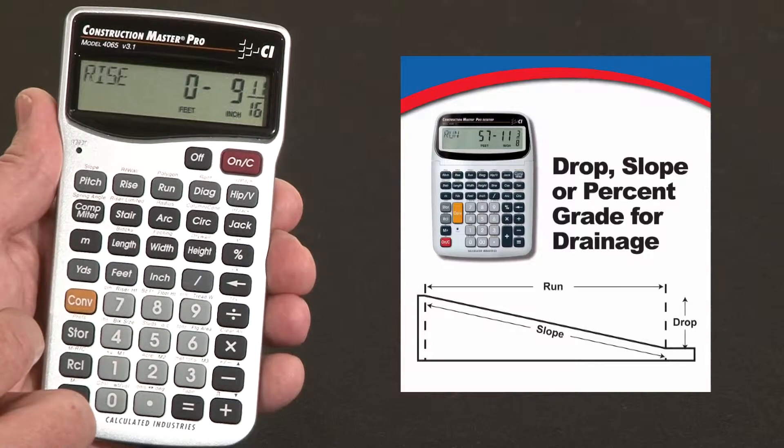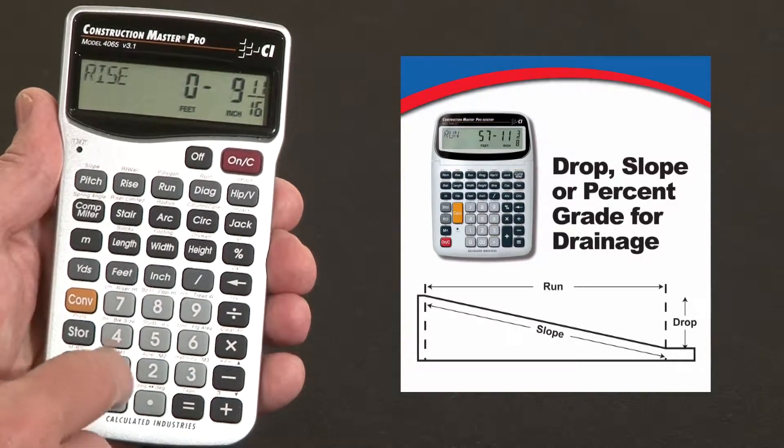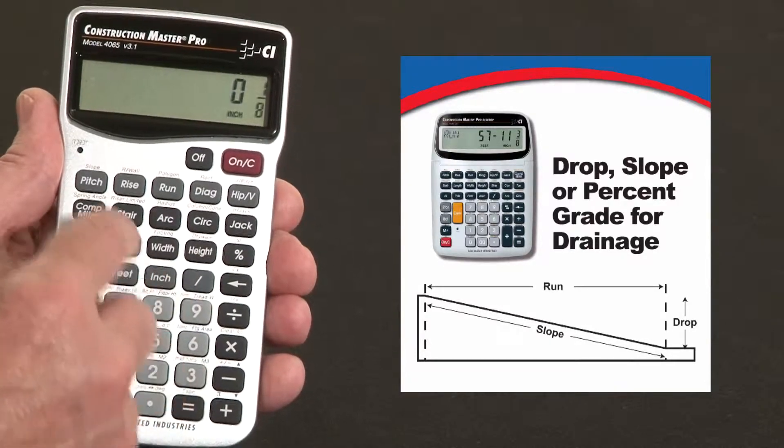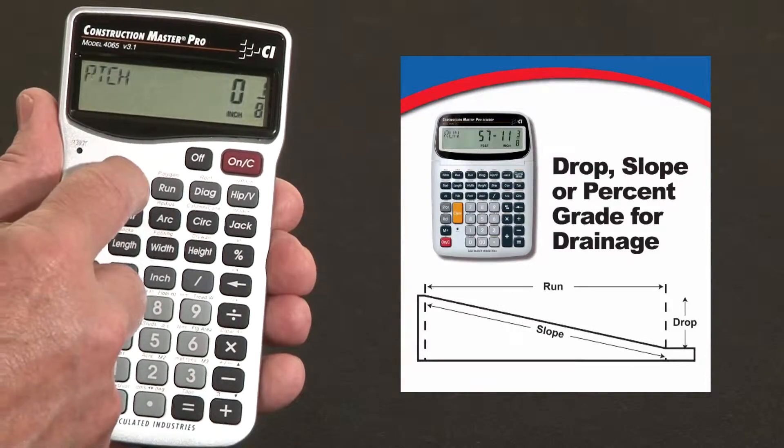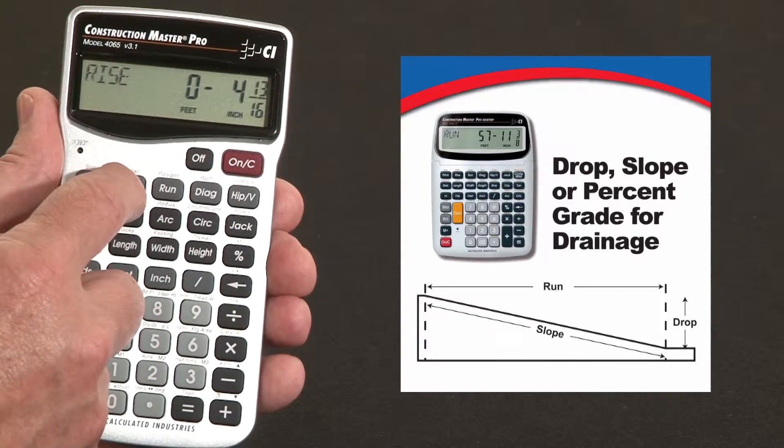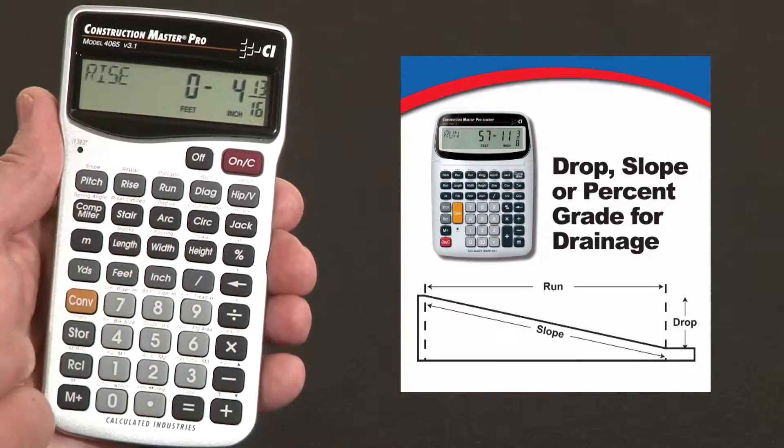Well maybe that's a problem - you don't want to dig that deep or there's an obstruction or something. What would it be at an eighth inch per foot? One eighth inch pitch. Now figure the rise. Four and 13 sixteenths. Maybe that's more doable. We can go with that.